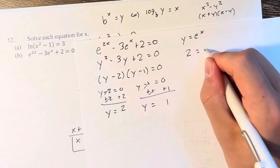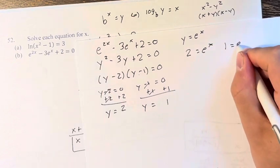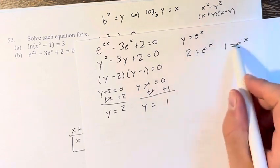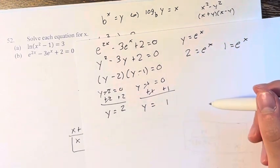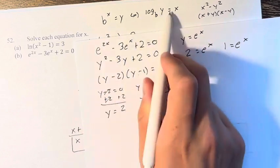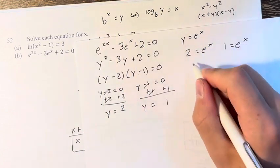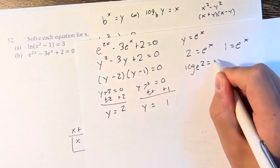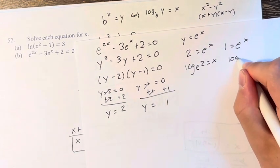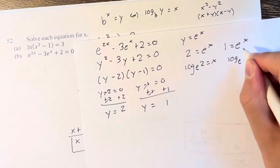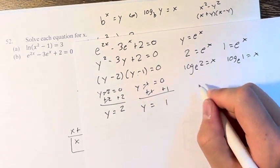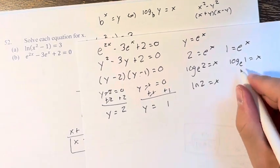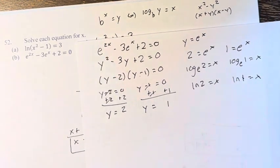Therefore, either 2 equals e to the x or 1 equals e to the x. For this last step that we have to do, we have to use this relationship once again. So therefore, log base e of 2 equals x or log base e of 1 equals x. Therefore, log base e is ln of 2 equals x, ln of 1 equals x. These are the two solutions.